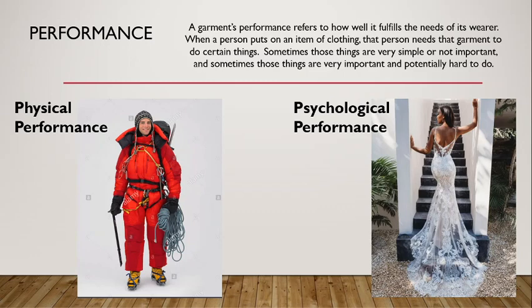With physical performance, we're looking at actual physical things the garment is doing — very real performance requirements. Take the mountain climber example: that garment is doing a lot. It's protecting him from the cold, providing pockets for his carabiners, maps, and compasses. It probably has places for his harness straps that need to attach very well and not break — because if you're on a mountain and you slip and fall, that harness is pretty much the only thing keeping you alive. If it breaks, that is very bad. Those are physical performance things: physical attributes a garment needs to fulfill.